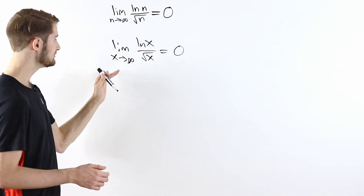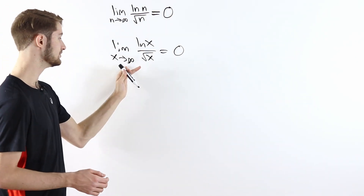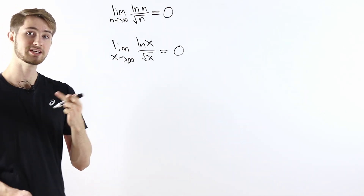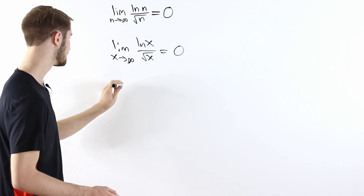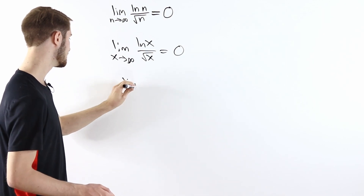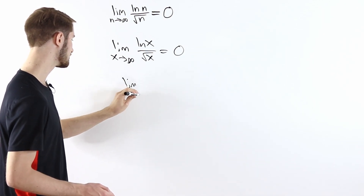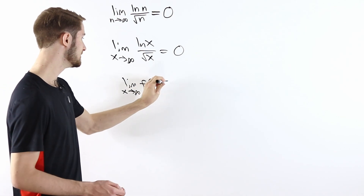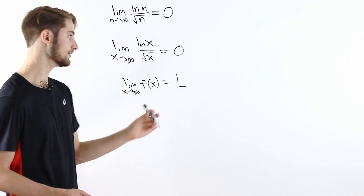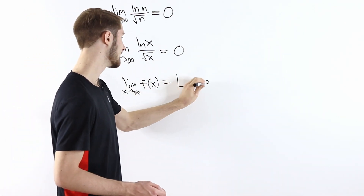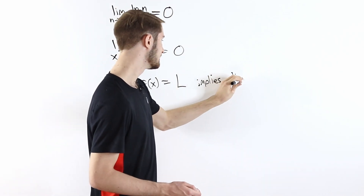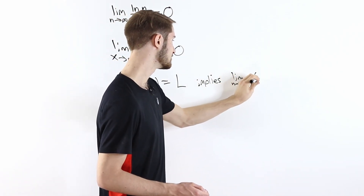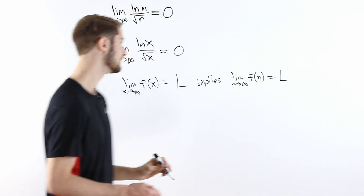The reason we can take the limit as x goes to infinity to get the answer for the limit as n goes to infinity is because of a general fact about limits: if we have the limit as x goes to infinity of some function f(x) being equal to some number L, this implies that the limit as n goes to infinity of that same function also equals L.